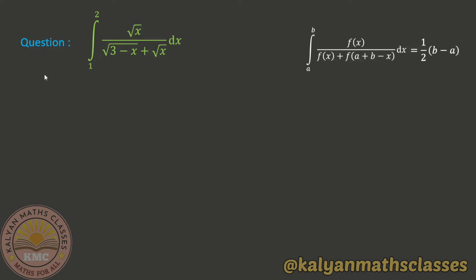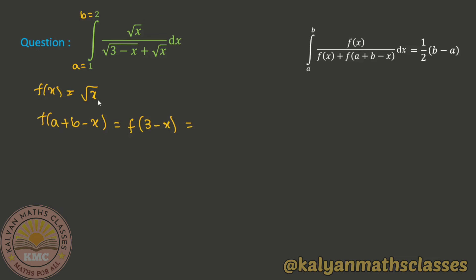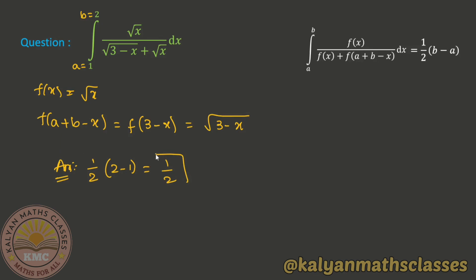Now for the next example, I put f(x) = √x. The value a = 1 and b = 2. So f(a+b-x) is also written in the form of x. The formula gives (1/2)(b - a), so (1/2)(2 - 1) = 1/2. Let us solve this problem.